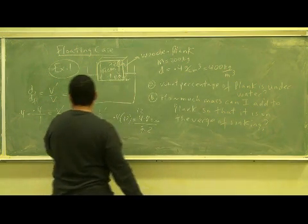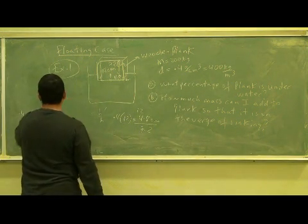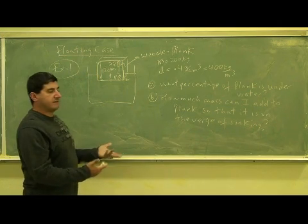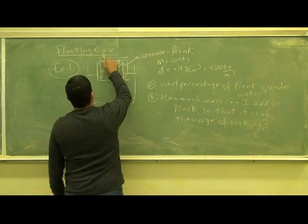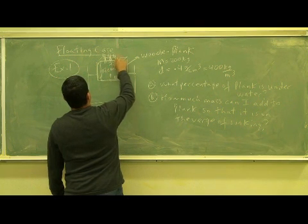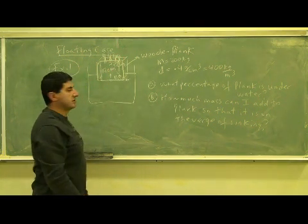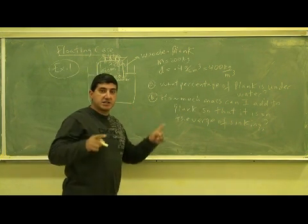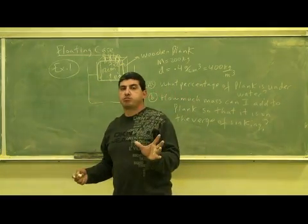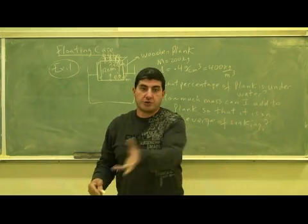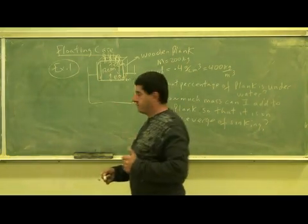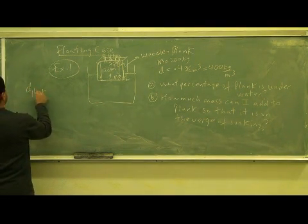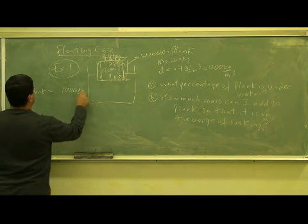Now, how much mass can I add on top of this plank? The logic is: as I add more mass — say people and cargo are coming onto the wooden plank — the volume is not changing. Basically, when the new effective density of the wooden plank reaches 1 gram per cubic centimeter, or 1000 kilograms per meter cubed, the plank will be on the verge of sinking.